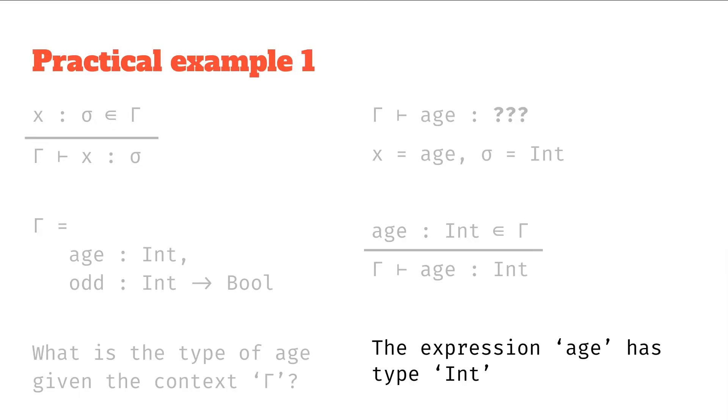But effectively, we can check certain things like is age has type int in the context, and then we conclude certain judgments like from the context that follows that age has type int.